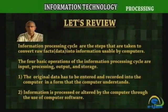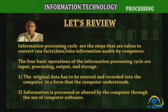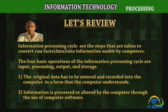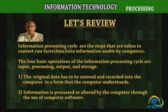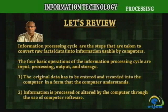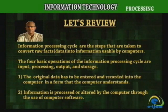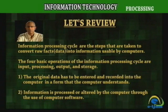Let's review. The Information Processing Cycle refers to the steps taken to convert raw facts or data into information usable by computers. The four basic operations of the information processing cycle are Input, Processing, Output, and Storage.